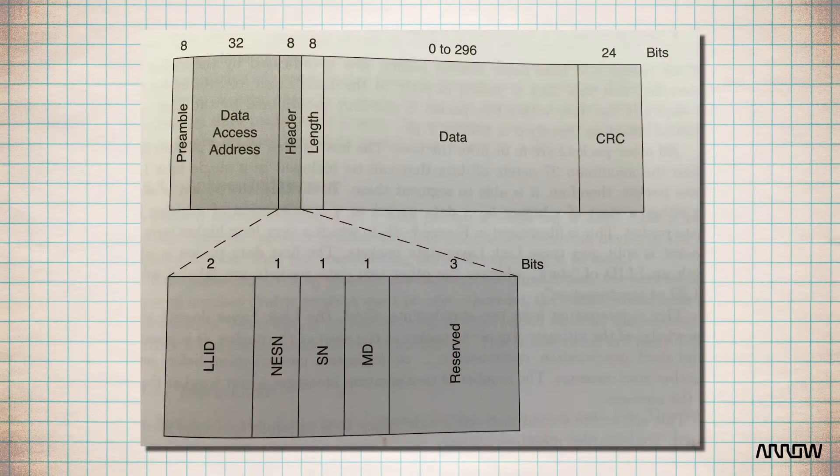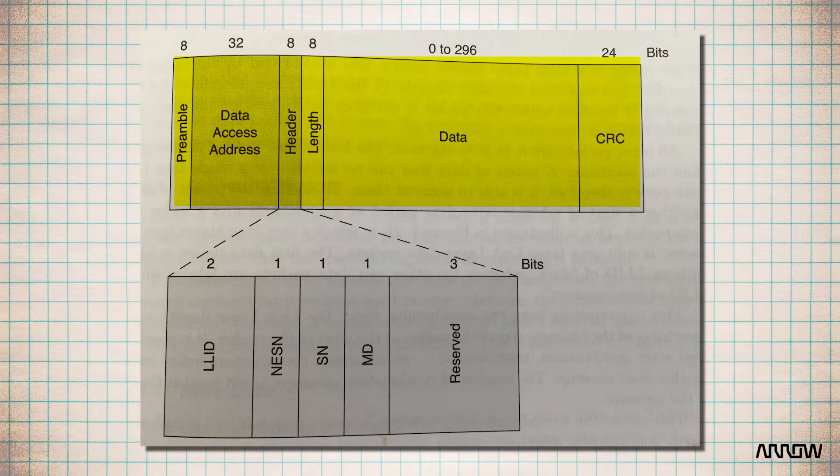When we explained advertising, we saw a packet structure contains a preamble, a data access address, a one-byte header, a one-byte length of the payload, the data, and finally a CRC. Data packets are similar but the header is different.